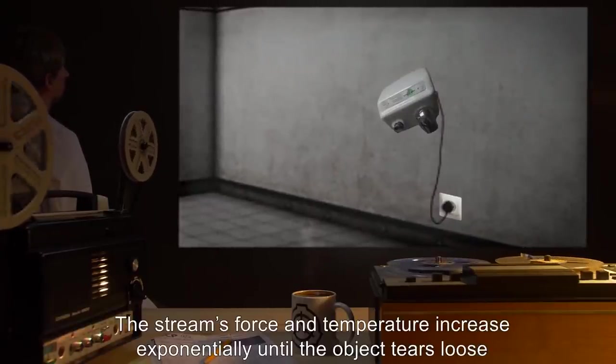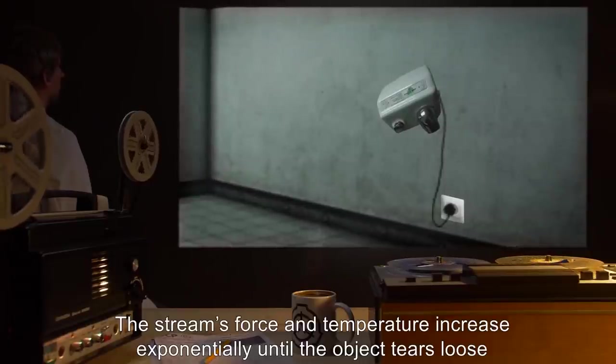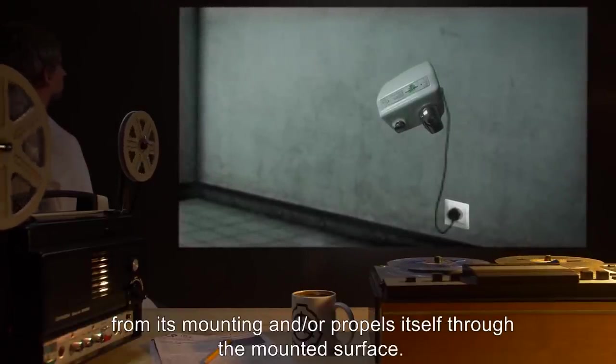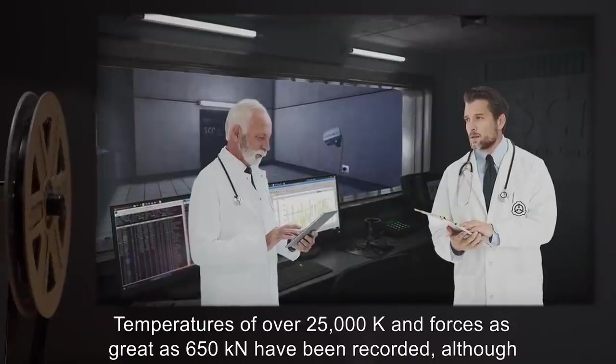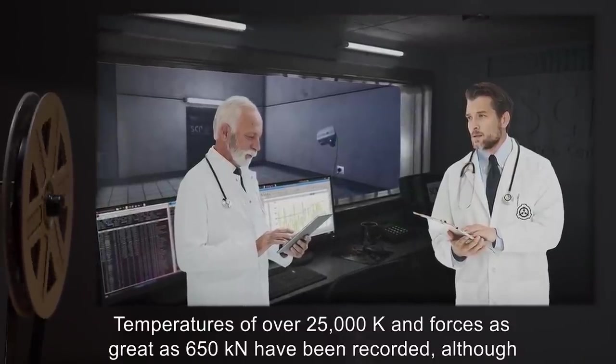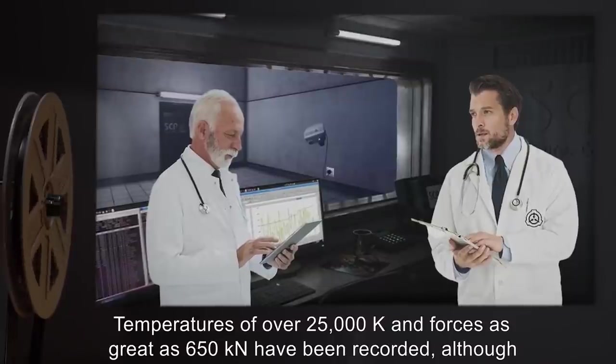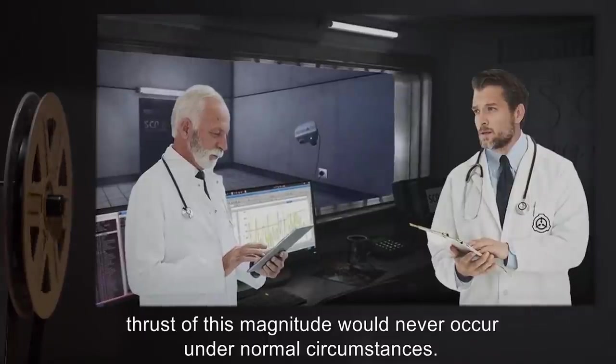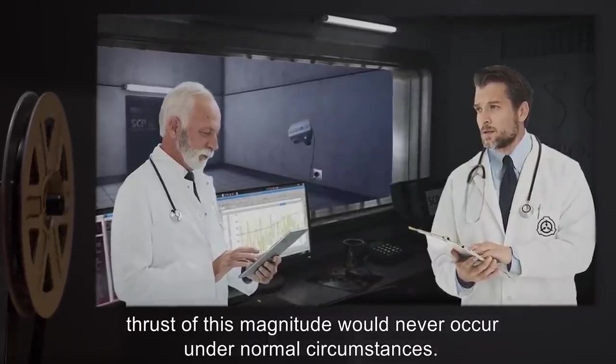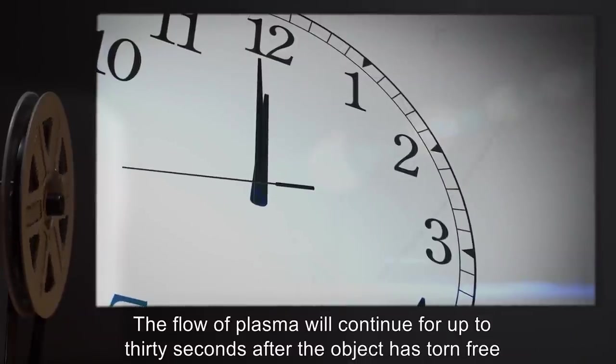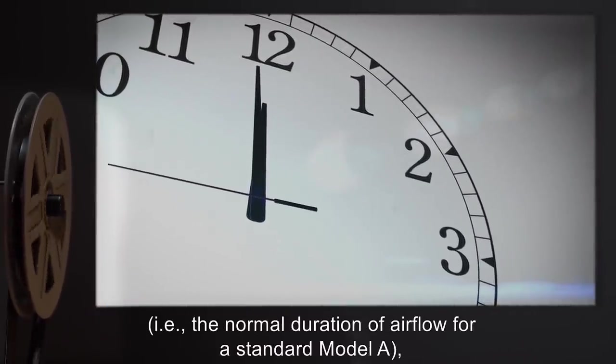The stream's force and temperature increase exponentially until the object tears loose from its mounting and/or propels itself through the mounted surface. Temperatures of over 25,000 kelvin and forces as great as 650 kilonewtons have been recorded, although thrust of this magnitude would never occur under normal circumstances. The flow of plasma will continue for up to 30 seconds after the object is torn free—i.e., the normal duration of airflow for a standard Model A—generally enough to propel the object an enormous distance if there is nothing in the way, or cause it to ricochet at high speed inside any structure in which the object is confined, potentially demolishing the structure.